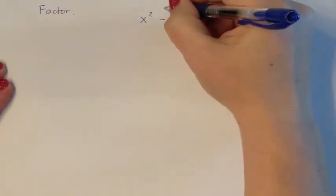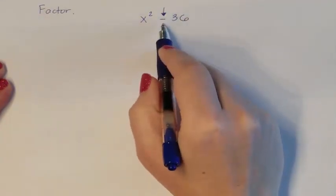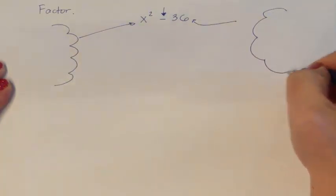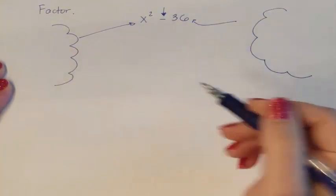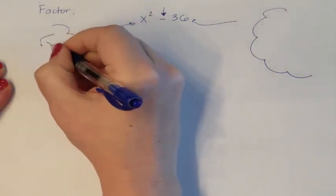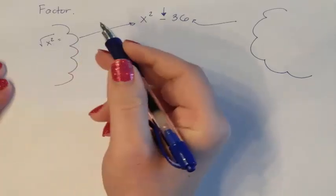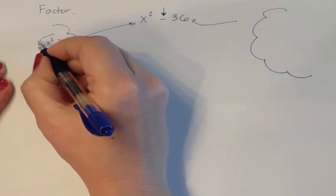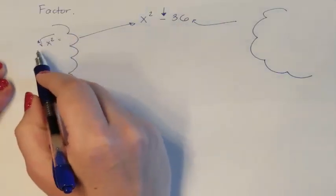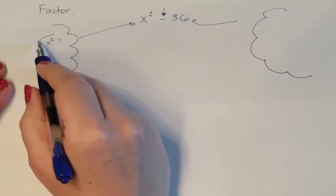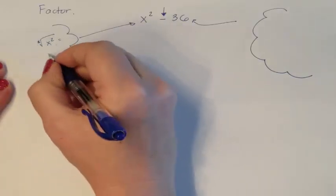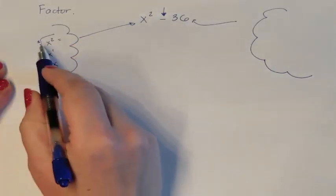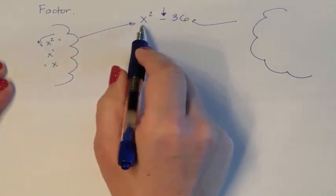Can I factor this? It is a subtraction problem, so I know it's a difference. Now I want to see, can I actually take the square root of both the front and the back? Because if I can, then it is a difference of two squares. The square root of x squared — quick review: if you can't remember how to take the square root of variables, the little root is a 2, that's why it's called a square root. You take the exponent and divide by the root. So 2 divided by 2 is 1, which is why it's x to the first power, written as just x.